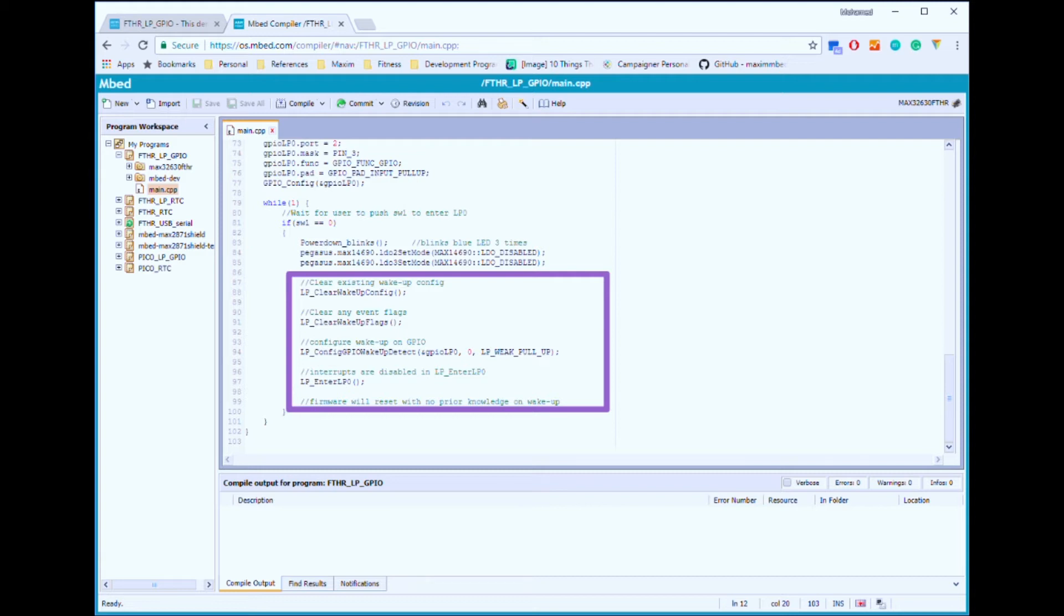There are four low-power functions in the purple box. The first one clears any previous wake-up configurations. The second one clears any asserted wake-up flags. The third one configures the GPIO connected to my switch as a wake-up source, and the fourth one puts the microcontroller into LP0 stop mode.